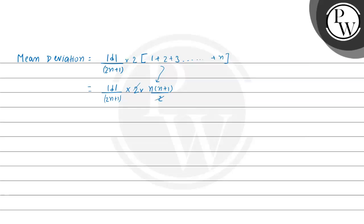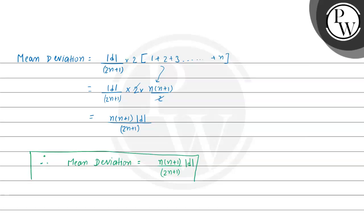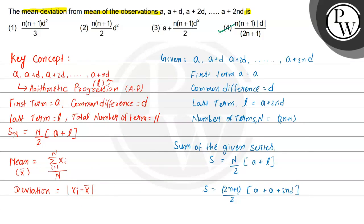The 2s cancel and we get the final answer: mean deviation = N(N+1) × |D| / (2N+1). Therefore, the mean deviation for the given series is N(N+1)|D|/(2N+1). Looking at the options given, option 4 is our correct choice. I hope you understood the solution. Best of luck. Thank you.